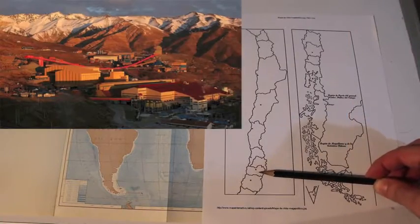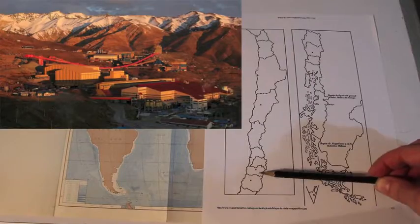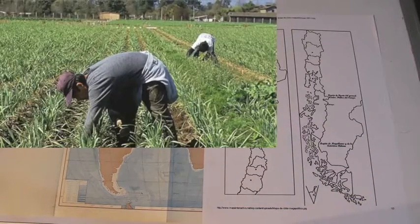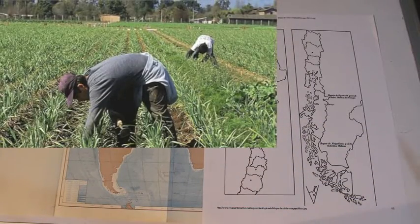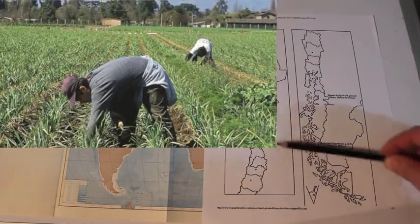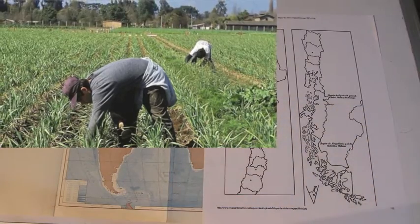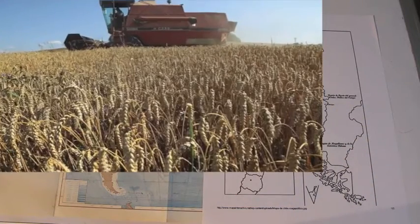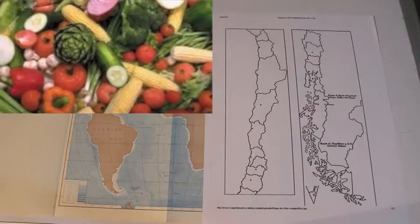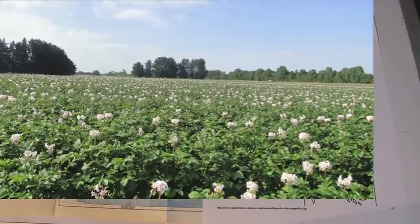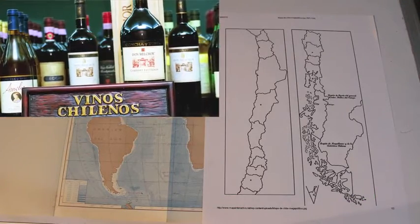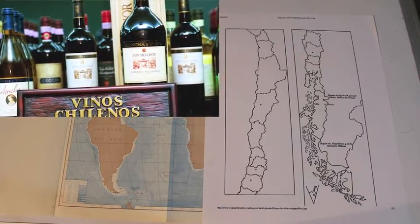Agriculture occurs in the central part and produces, for example, cereals, beans, vegetables, potatoes, fruit farming, and viticulture.